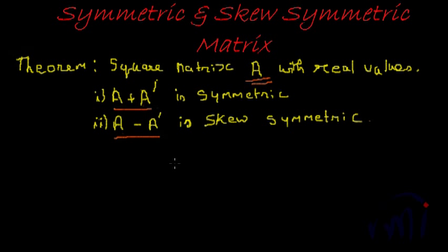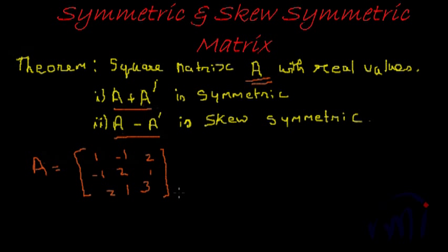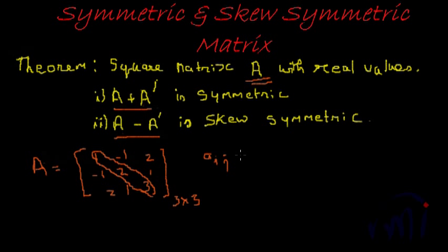Before we prove this, let us recap what a symmetric matrix is. Let us take an example. Say A is equal to — this is a square matrix of order 3 by 3. The diagonal elements and the elements across the diagonal are symmetric. See 2 and 2, 1 and 1 and 1. So, a symmetric matrix will have A_ij equal to A_ji, where i is the row number and j is the column number. This is what a symmetric matrix is.